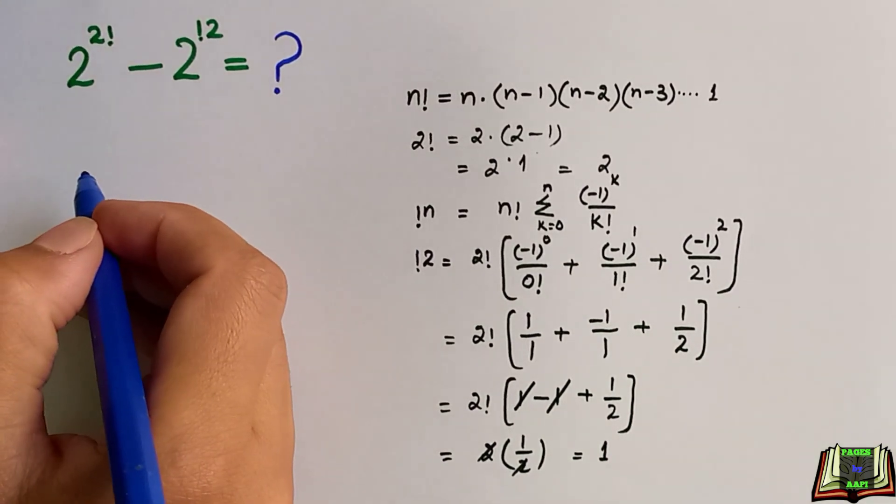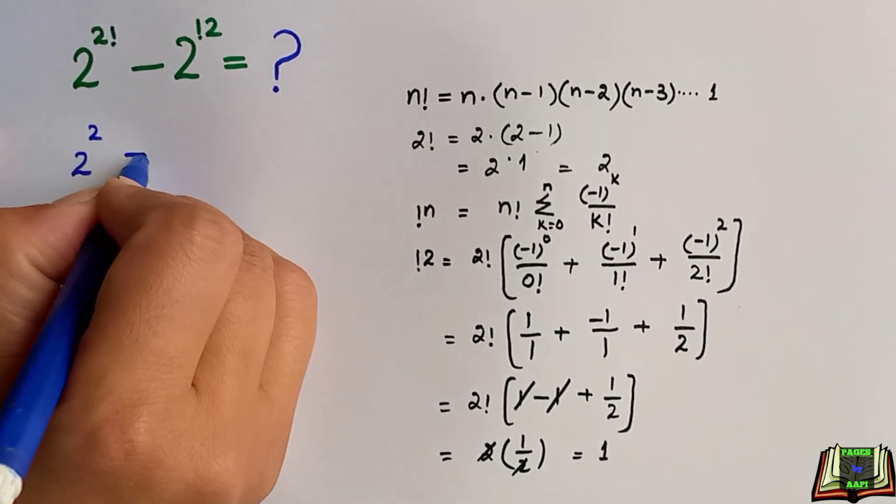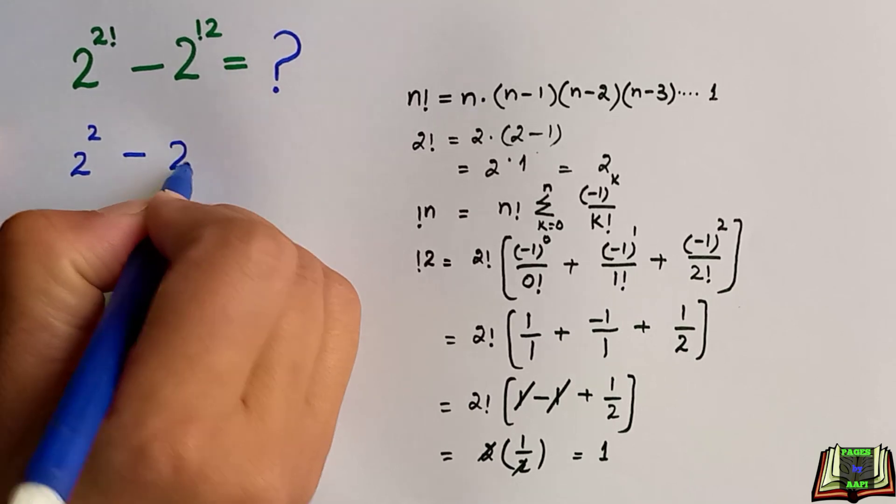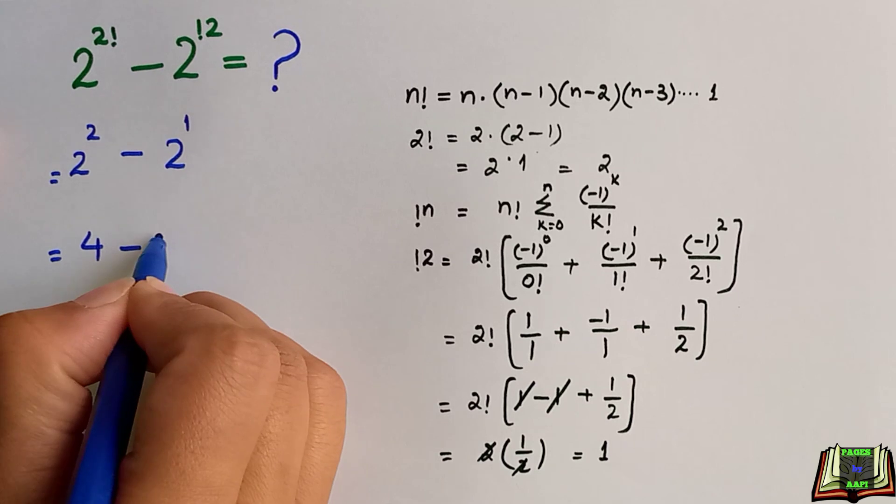After putting the values of exponents, the expression becomes 2 to the power 2 factorial which is 2, minus 2 to the power subfactorial of 2 which is 1. 2^2 is 4 minus 2^1 is 2. 4 minus 2 equals 2. That is the final answer.